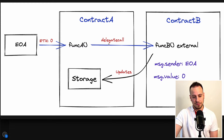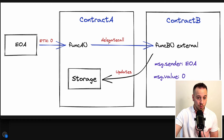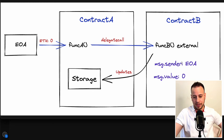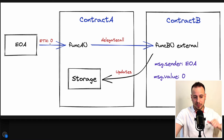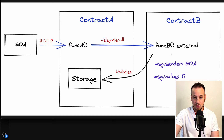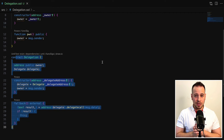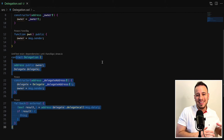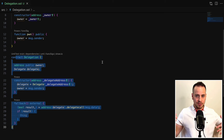This means that the message sender and the message value in this function execution is still going to be the same as the EOA account. You already know that if we make a normal call, the message sender is going to be changed to contract A and the message value will change based on what was forwarded. But in delegate call, it doesn't work that way — the message context stays the same, and the storage is updated in contract A instead of contract B. This is just the tip of the iceberg, and if you want a more detailed explanation, check the Smart Contract Hacking course.